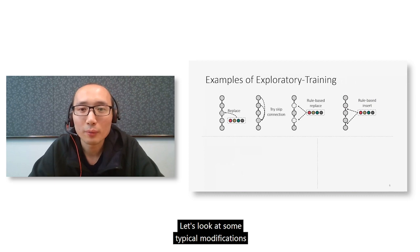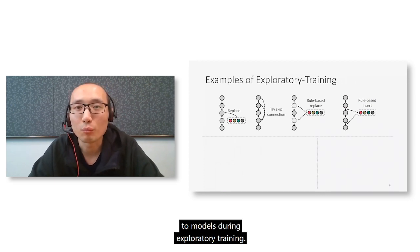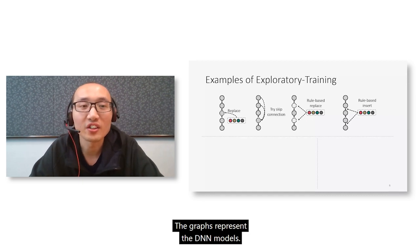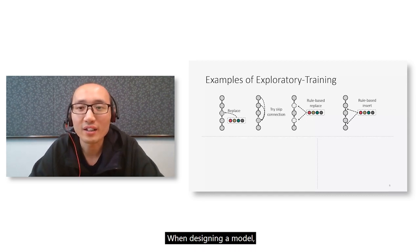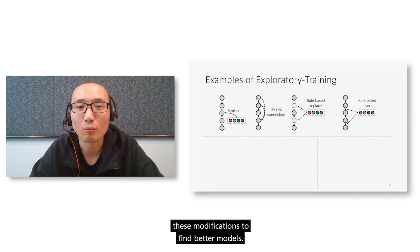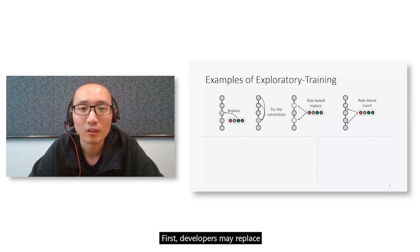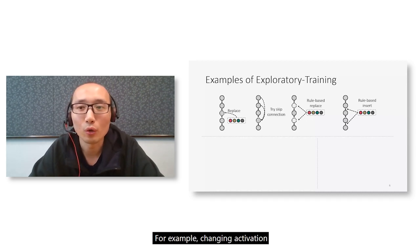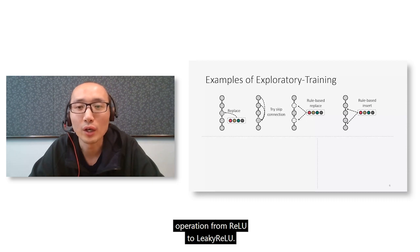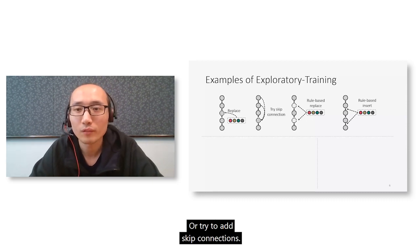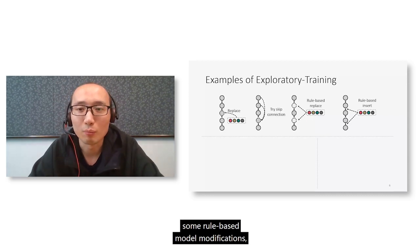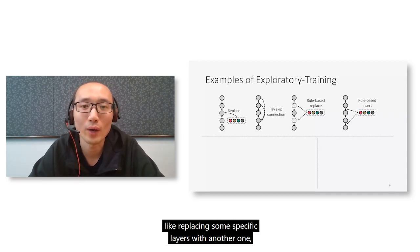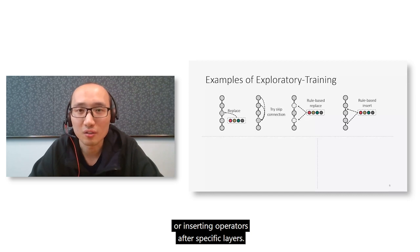Let's look at some typical modifications to models during exploratory training. The graphs represent DNN models. When designing a model, developers do some of these modifications to find better models. First, developers may replace an operator with another one, for example changing the activation operation from ReLU to leaky ReLU, or try to add skip connections. Also, there could be rule-based model modifications like replacing specific layers or inserting operators after specific layers.